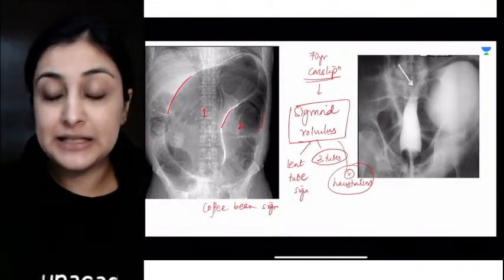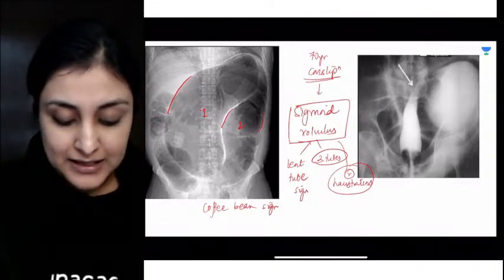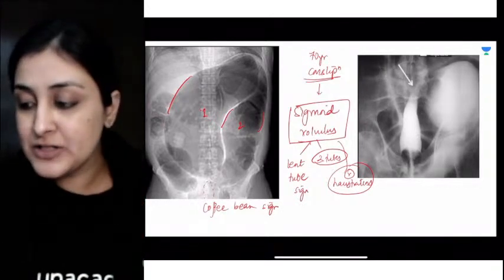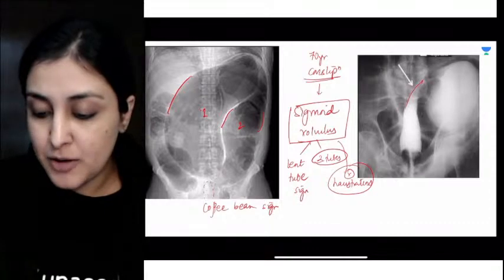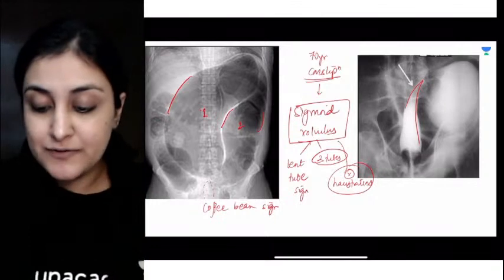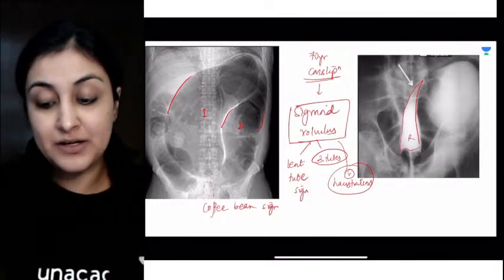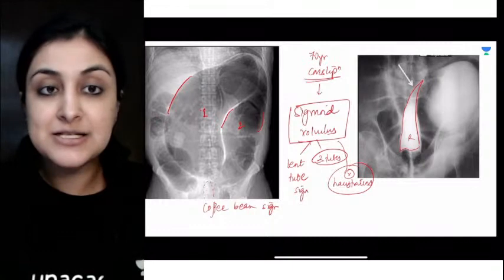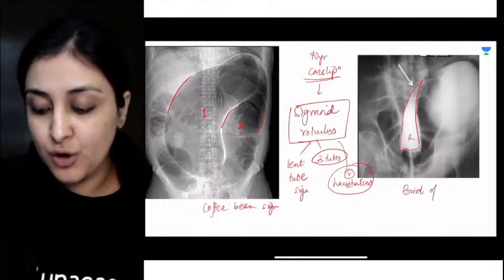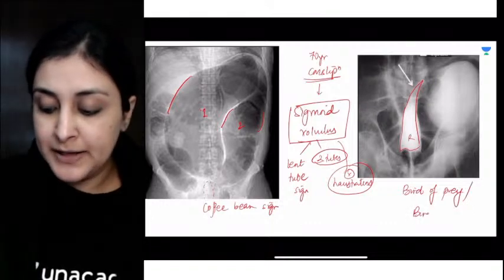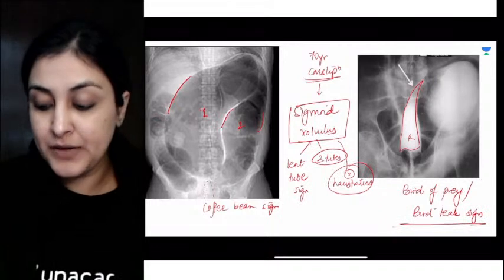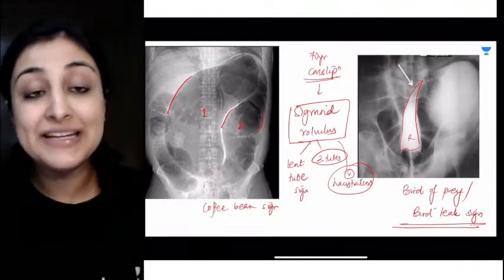This is coffee bean sigmoid volvulus. If we do a barium enema here, what will you see? From the rectum we'll put barium. Where there is volvulus happening, the barium will stop. The barium will stop like this because above this there is twisting. There is volvulus here. So we will see that there is tapering of rectum and proximal tapering at the point of volvulus. This is called bird of prey sign or bird beak sign. This is also a sign of sigmoid volvulus but on barium enema.